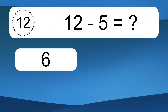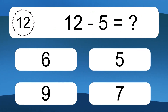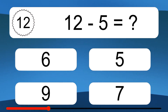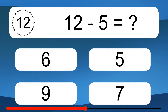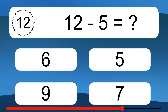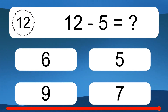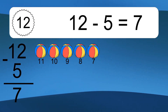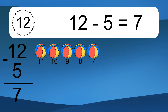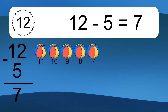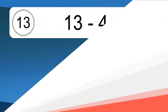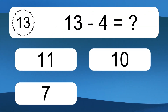12 minus 5 equals what? 12 minus 5 equals 7. Let's count it. 11, 10, 9, 8, 7.